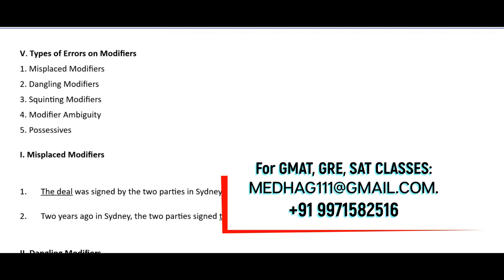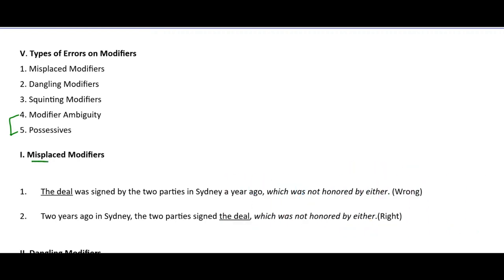The five types of modifier errors are: misplaced modifiers, dangling modifiers, squinting modifiers, modifier ambiguity, and possessives. These last two are more or less the same. We will discuss all of these one after another. The name 'misplaced' suggests the modifier has to be properly placed, but in the sentence it is not properly placed.